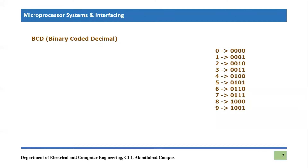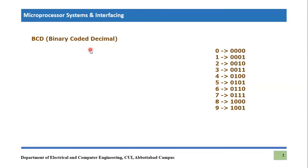BCD stands for Binary Coded Decimal. Decimal numbers use the symbols 0 through 9, and we combine these to make larger numbers — for example, 10, 11, 12, and so on. Binary Coded Decimal means a decimal number is coded using binary, and we use only four bits.